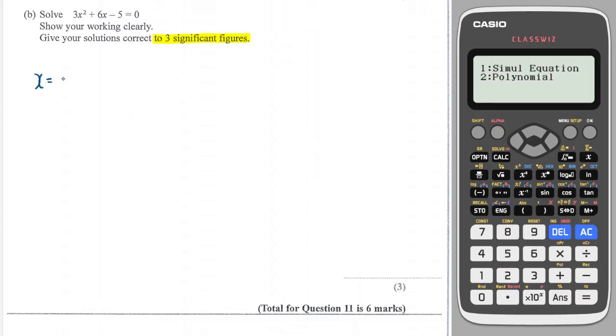The quadratic formula is given in your formula booklet as x equals minus b plus or minus the square root of b squared minus 4ac all over 2a. So a is 3, b is 6, and c is minus 5.